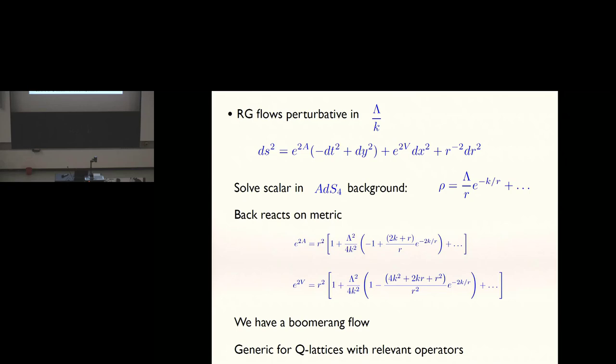Let's imagine lambda over k is very small, and let's solve the equations perturbatively in lambda over k. We take AdS, and we solve the linearized equation for rho in that background, and you get this behavior here. I could write that as lambda over k times k over r. Then I see how that back-reacts on the metric at order lambda over k squared, and it turns out you can solve that exactly. It returns to the vacuum for rho, and this term drops out, and this term drops out, and we see that we have exactly AdS4 plus a renormalization of length scales.